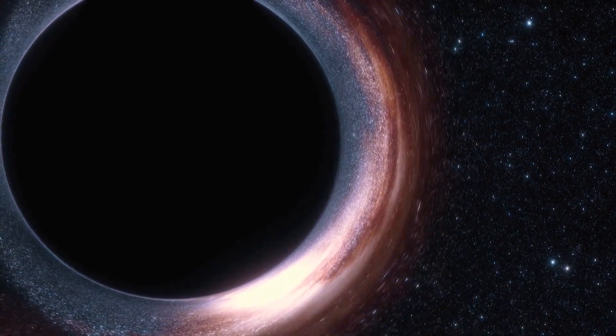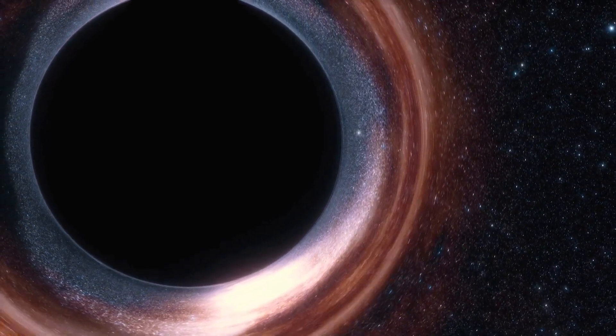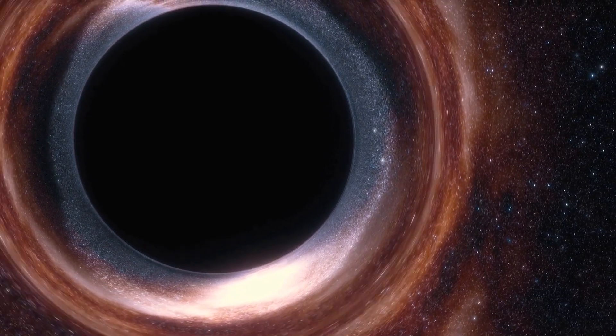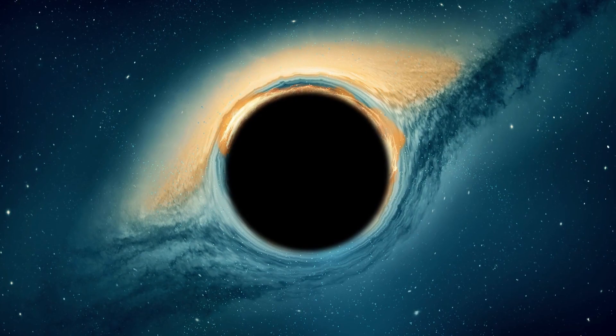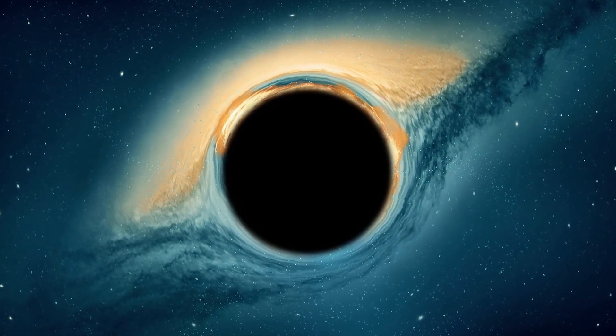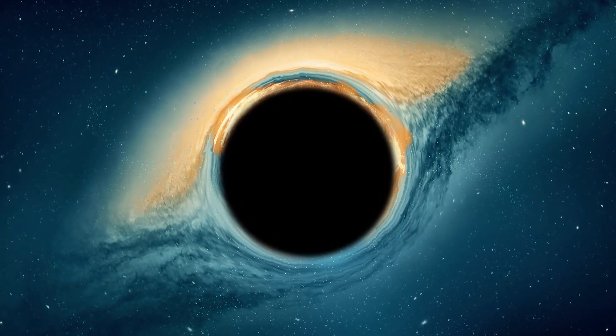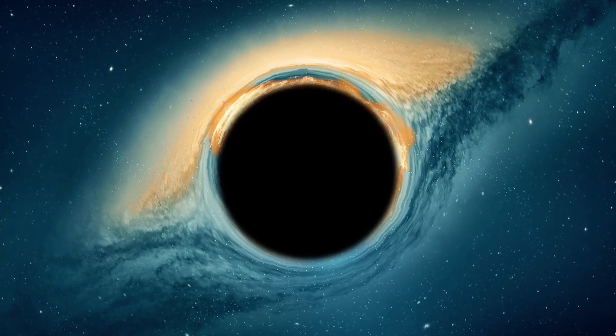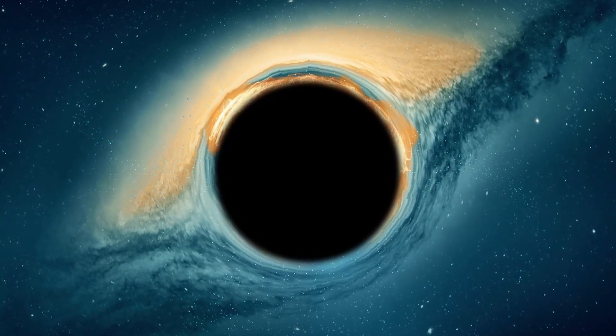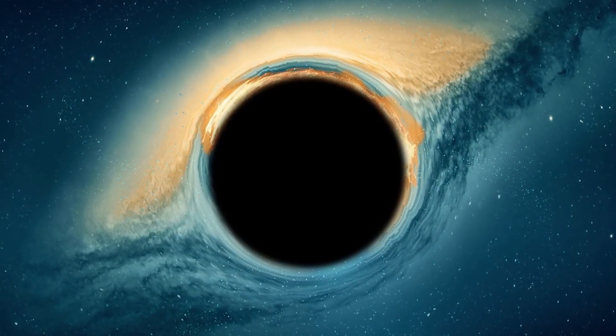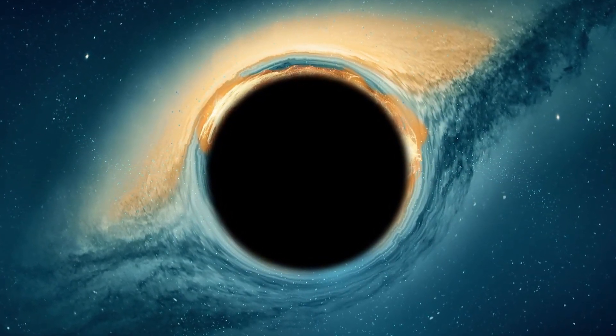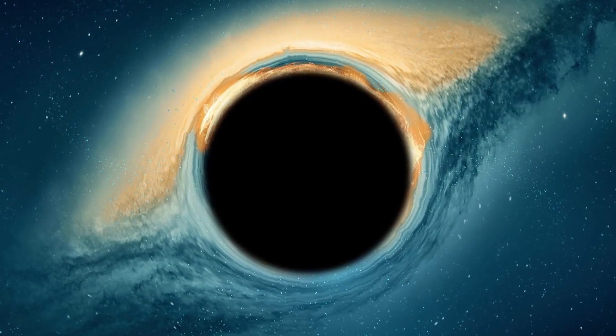As we well know, black holes possess extremely powerful gravitational force that even light cannot escape. However, in the vicinity of a black hole, one often finds a spinning disk of material, such as gas or dust, concentrated by its immense gravity. This material heats up as it spirals towards the black hole, emitting X-rays and other types of radiation, creating a luminous ring known as a corona.